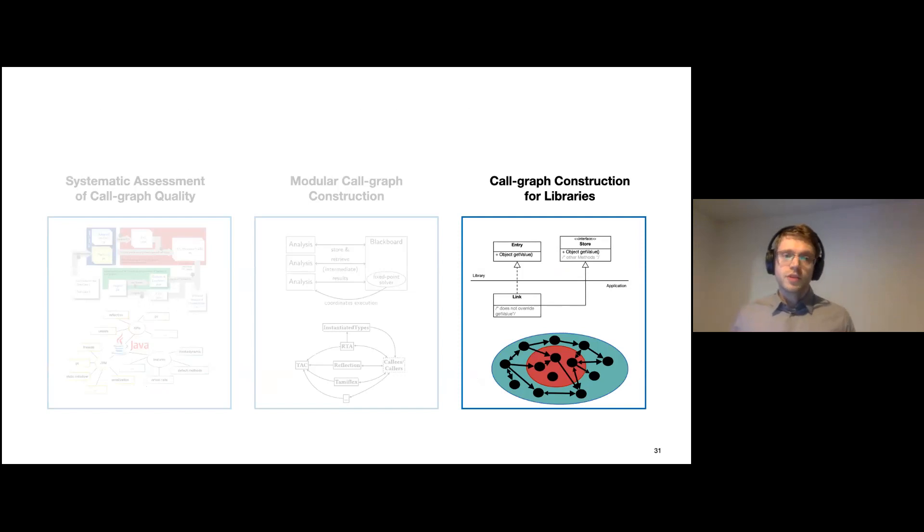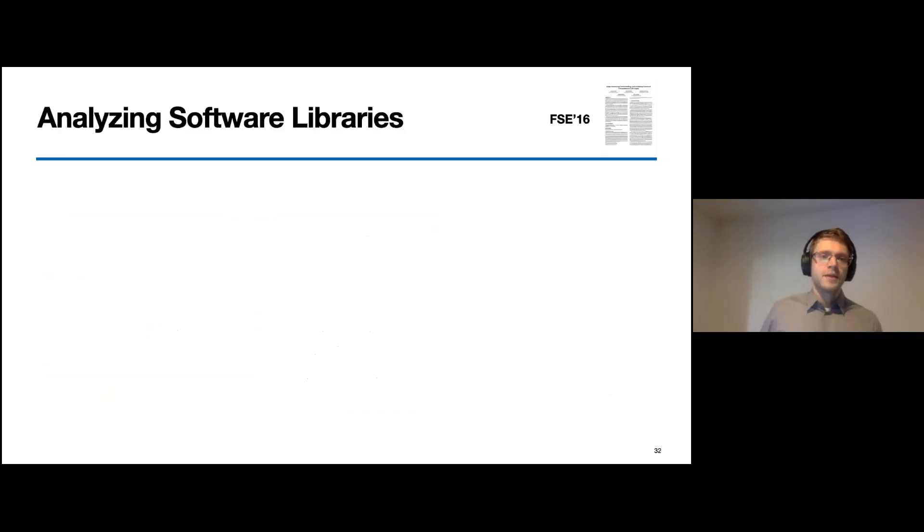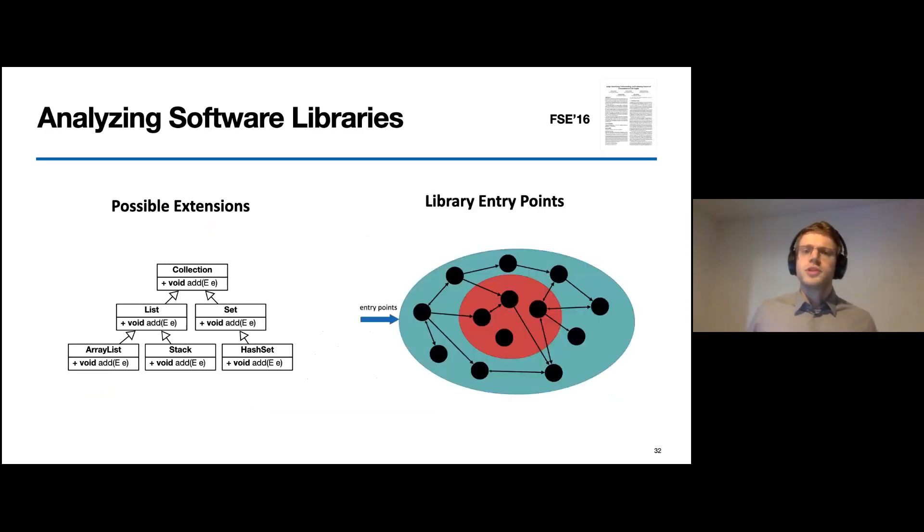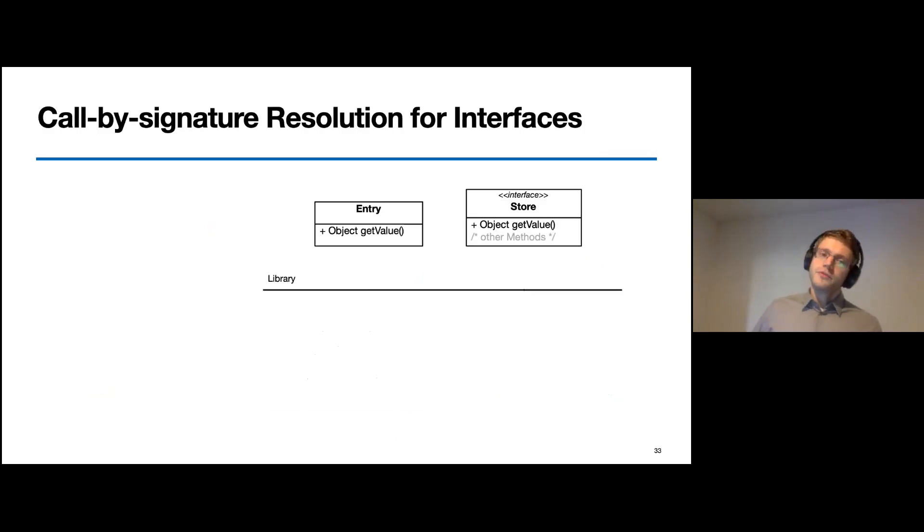So far, I have talked about standalone applications and now we take a look into the peculiarities of building library call graphs and show why previous approaches have been unsound. When we analyze libraries, we have to make special considerations that have been ignored so far. On one hand, libraries can be extended by applications that use it later on. And on the other hand, libraries usually provide a public API that defines its interface and therefore also its entry points.